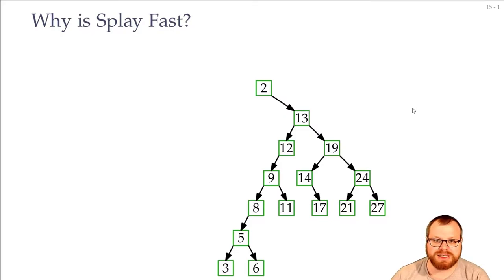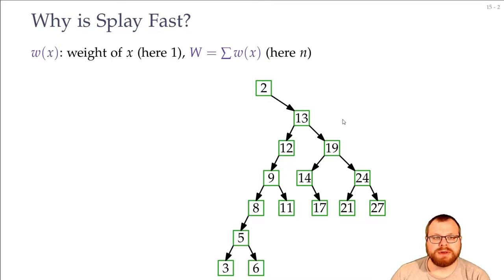And with fast we mean amortized order of log n time, usually. So we have the following tree. And we want to define some weights first. For this example I just set the weight of every key to 1. Later we will pick different weights. But for now let's just say every key has a weight of 1. And this capital W is the sum of all the weights. Here it is just n.